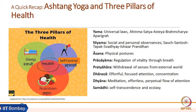We also discussed the eight limbs of yoga: yam, niyam, asana, pranayam, pratyahar, dharana, dhyana, samadhi. Yam and niyam are psycho-social interventions; asana and pranayam are psycho-physical interventions; pratyahar is mostly a psychological intervention with some remnants at the physical level; and dharana, dhyana, samadhi are predominantly psychological and spiritual interventions.